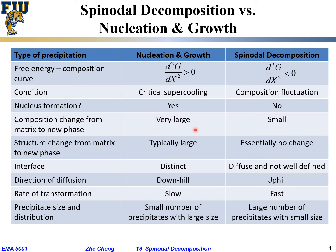For nucleation and growth, the new phase formed quite often has a very different composition from the matrix or host material. In terms of structural change, spinodal decomposition at the beginning stage has essentially no structural change — the two related phases must have the same crystal structure, with only a very slight difference in lattice parameter. For nucleation and growth, the precipitates that form quite often have very different lattice parameters and in many cases also a very different crystal structure from the host or matrix phase.